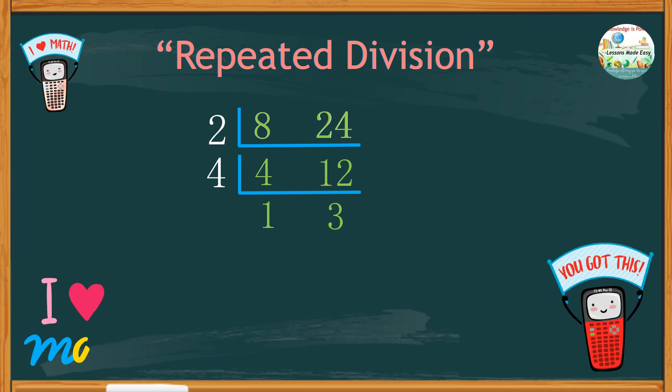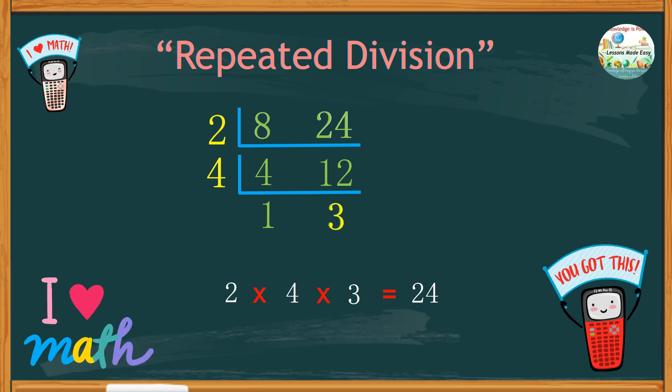We can now stop dividing from this point, and all we need is to take the product of common and uncommon divisors, which are two, four, and three. There's no need to include one because any number multiplied by one is the same number. So, two times four times three is twenty-four. Thus, the least common multiple of eight and twenty-four is twenty-four.